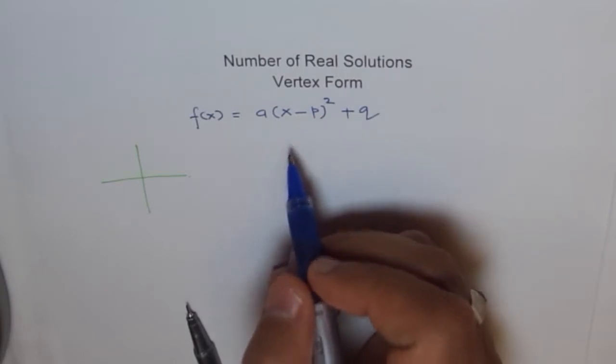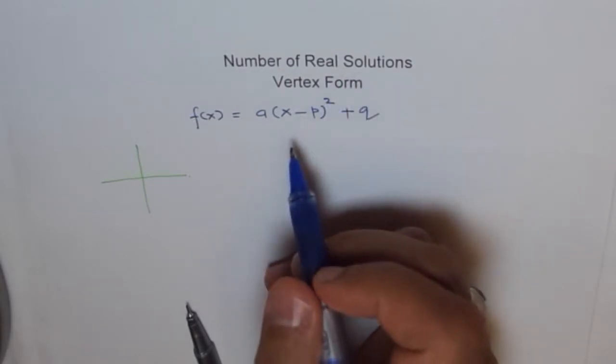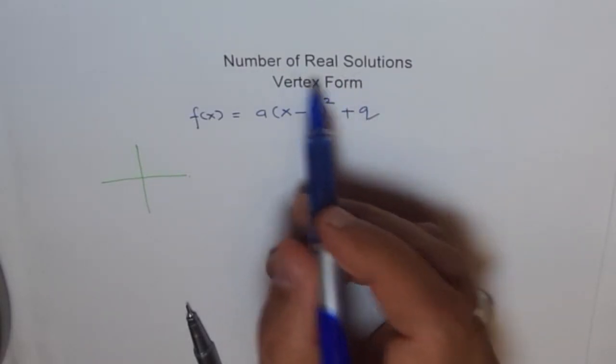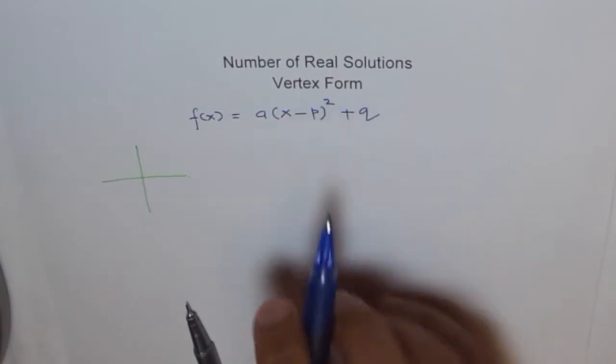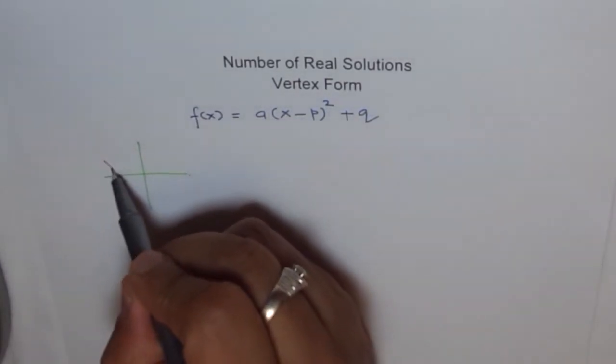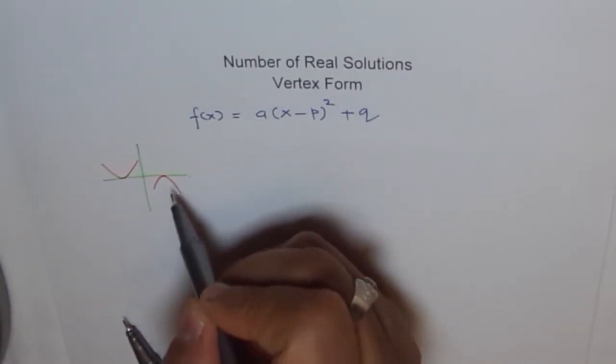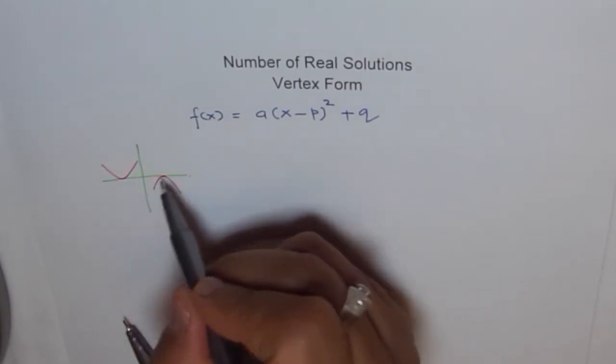Now, first condition, when will you have just one real solution? For one real solution, our scenarios could be that we have a parabola something like this or something like this. That means it may open up or down, but the vertex is on the x-axis.